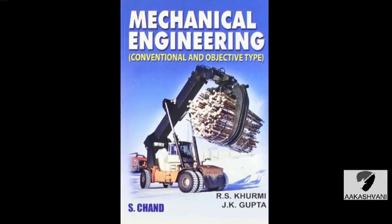Question number 58: Malleable cast iron is produced from white cast iron by an annealing process. Question number 59: When elements like nickel, chromium, copper, and molybdenum are added in the molten cast iron, alloy cast iron is produced. Question number 60: The addition of magnesium to cast iron increases its ductility and strength in tension.